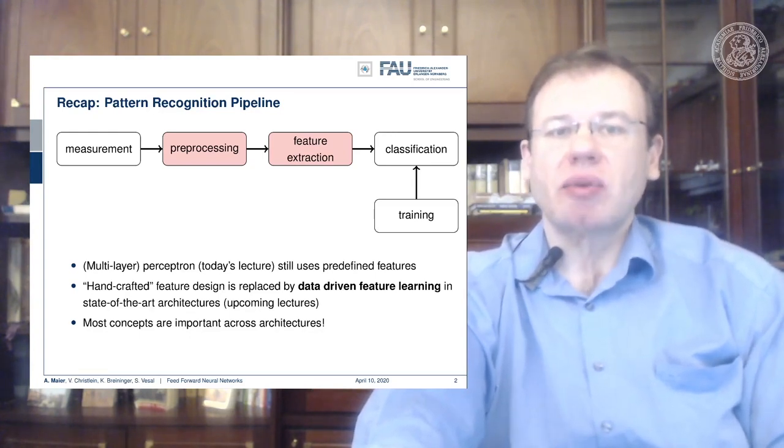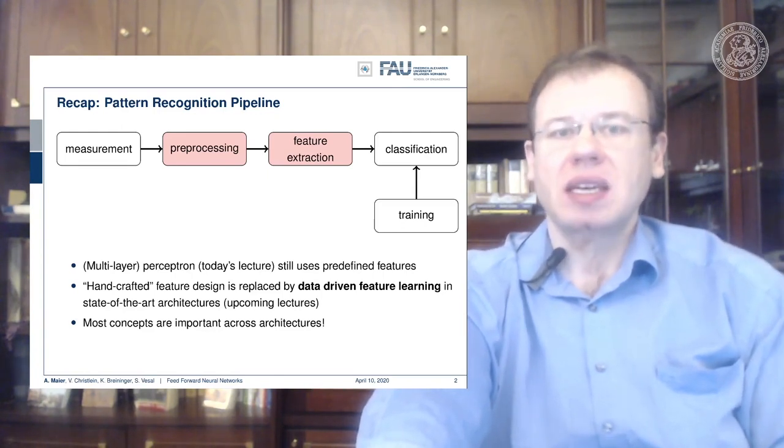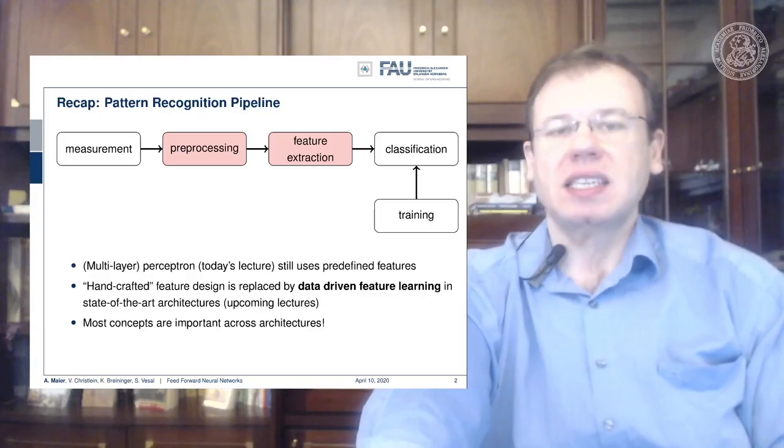Then we want to do feature extraction. You remember the example with the apples and pears. From these we extract those features which then results in some high dimensional vector space, which is basically a vector space representation summing up the input from all sensors. In this vector space we can then go ahead and do the classification.